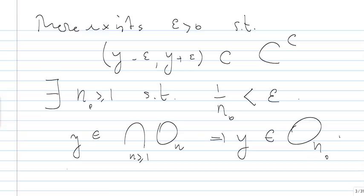So there exists an element A in C, since O_N0 is a union of this open interval, such that Y belongs to A minus 1 over N_0 and A plus 1 over N_0.